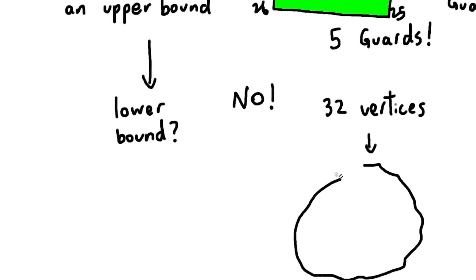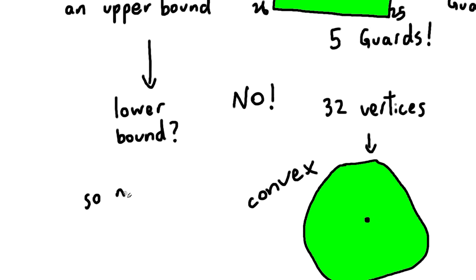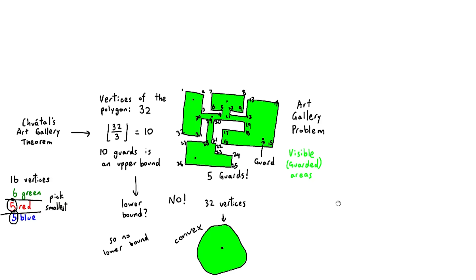Convex polygons are polygons that don't have a cave that points inward like Pac-Man. A single guard can see the entirety of the polygon, so there's no lower bound. Well, I guess the lower bound is one, but that's ridiculous, because zero guards obviously can't see anything.